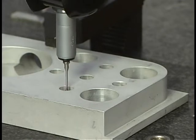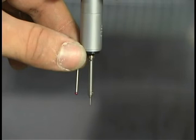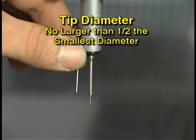The feature dimensions being checked may require the tip of the probe to be changed. The diameter of the probe tip should be no larger than half of the smallest diameter to be checked. For example, if the smallest diameter being measured is two millimeters, the tip should be no larger than one millimeter.